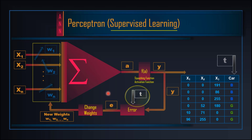Perceptron بنیادی طور پر ایک supervised machine learning کا algorithm ہے جو neural networks کے domain میں آتا ہے۔ اس کا primary role یہ ہے کہ supervised learning کرے۔ اس میں وہی چار steps ہیں — activation نکالنا، activation function apply کرنا، error نکالنا، اور weights کو update کرنا۔